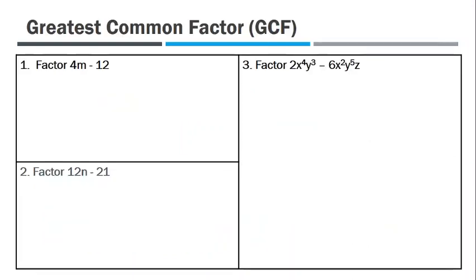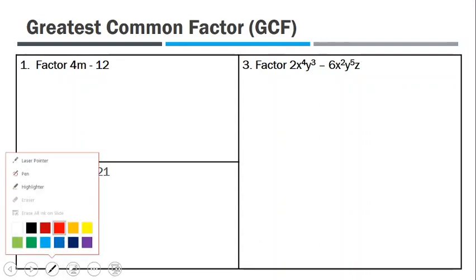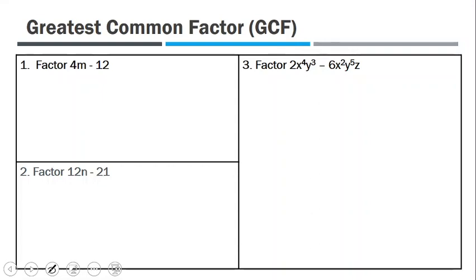For the first example, you want to factor the GCF out. So you have 4 multiplied by m minus 4 multiplied by 3. We can see that 4 is common between these two, so we can remove that 4 that is common, and we have m minus 3 remaining.